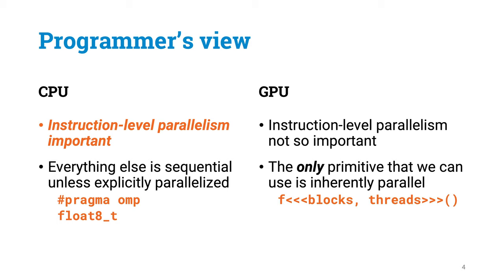In both cases you will need to parallelize your code, but the specific techniques are very different. In CPUs you will arrange your code so that there is plenty of room for instruction level parallelism, and then on top of that you use for example OpenMP for multi-threading, and finally use vector types to benefit from vector operations.